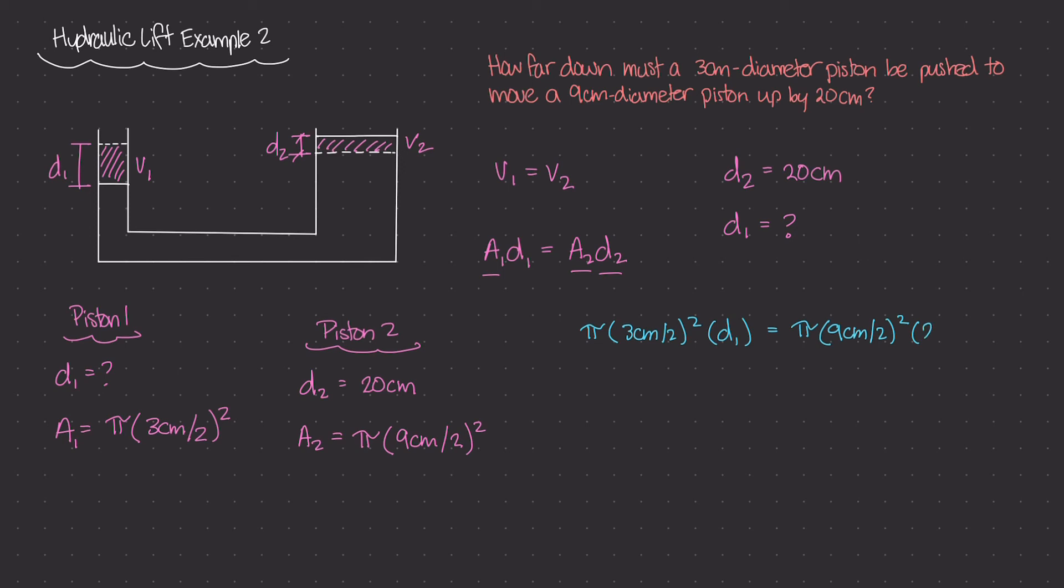So you can see that the π's cancel out, and if we just solve for d1 by plugging this into our calculator, we get d1 is 180 cm or about 1.8 meters.